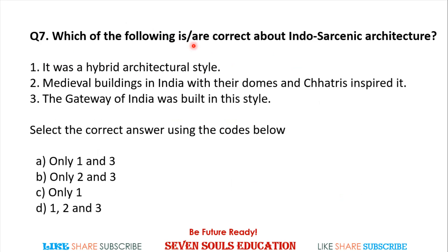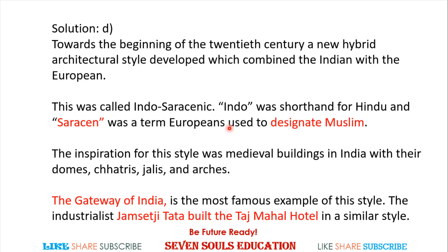Seventh question: Which of the following are correct about Indo-Saracenic architecture? It is a hybrid architectural style; medieval buildings in India with domes and chhatris inspired it; the Gateway of India was built in this style. Select the correct answer. The answer is all three — 1, 2, and 3 are correct.